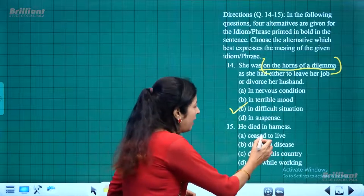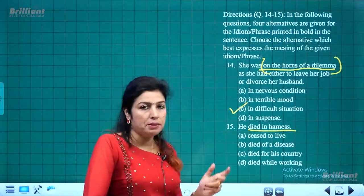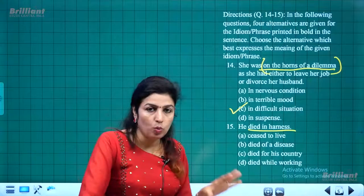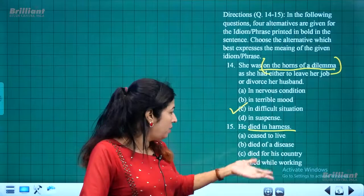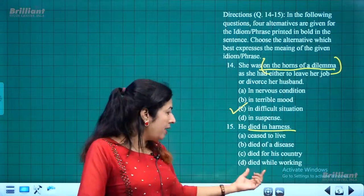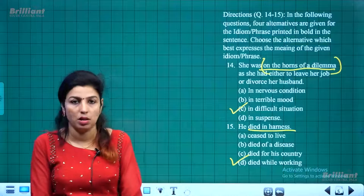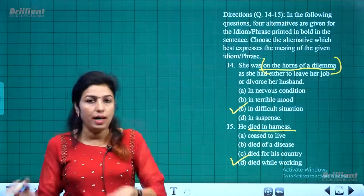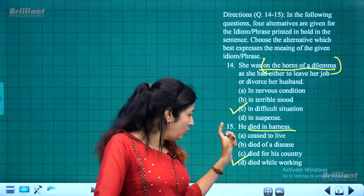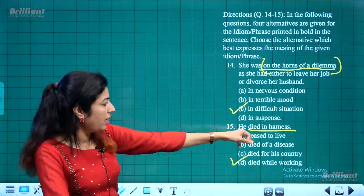The second idiom: 'He died in harness.' To die in harness means to die while still working — for example, a soldier who dies while fighting for his nation. It does not mean dying of disease or dying for one's country in general — specifically it means passing away while actively working. So 'died while working' is the correct meaning.